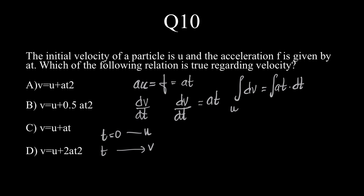So we have the limits as u comma v and limits for t as 0 comma t. In which case, the integral v varying from u to v is equal to a into t square by 2 varying from 0 to t.